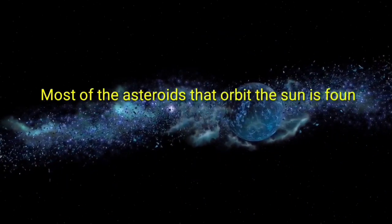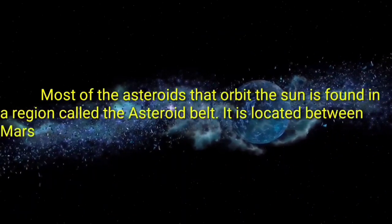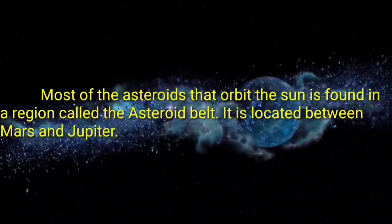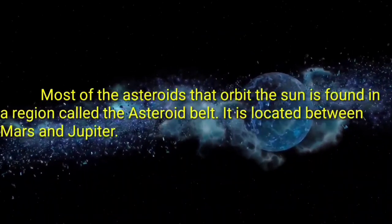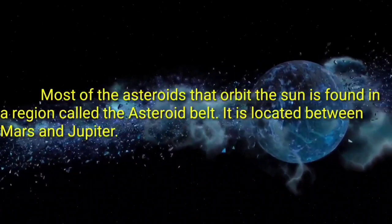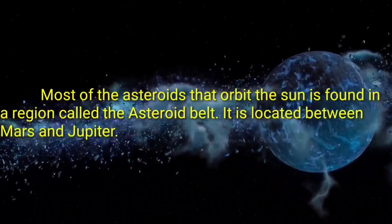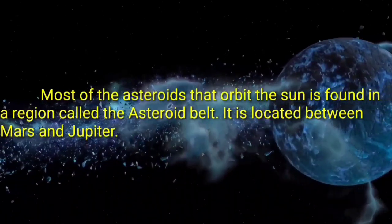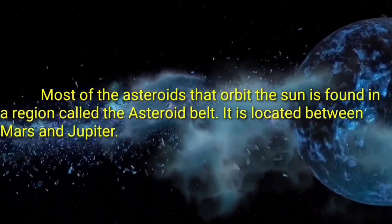Most of the asteroids that orbit the Sun are found in a region called the Asteroid Belt. It is located between Mars and Jupiter.